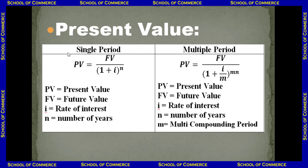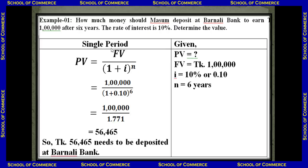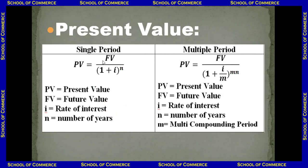The formula for single period: PV (present value) is equal to FV (future value) divided by (1 + i) to the power of n. Here, PV denotes present value, FV denotes future value, i is the rate of interest, and n is the number of years.